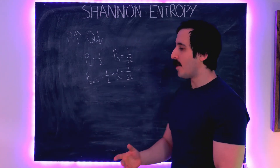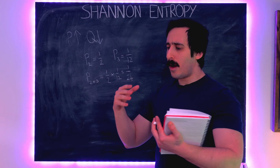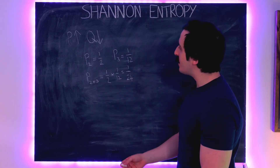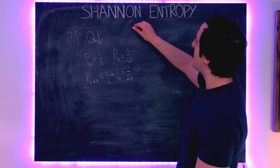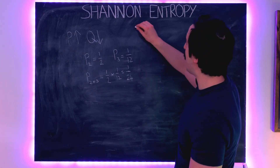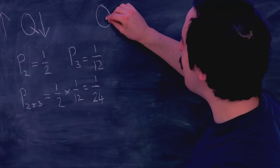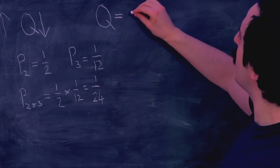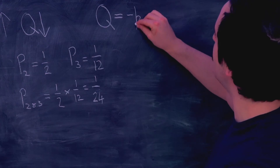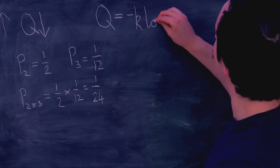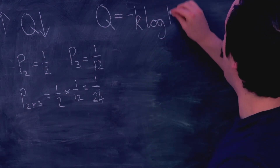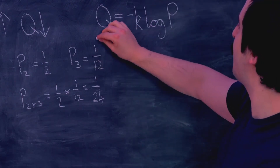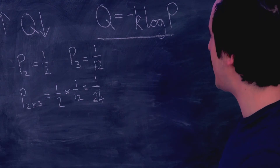This is what motivated Shannon to adopt the following definition for information content: Q is defined as equal to minus K log P, where P is the probability and K is a constant. This is how Shannon defined information content.